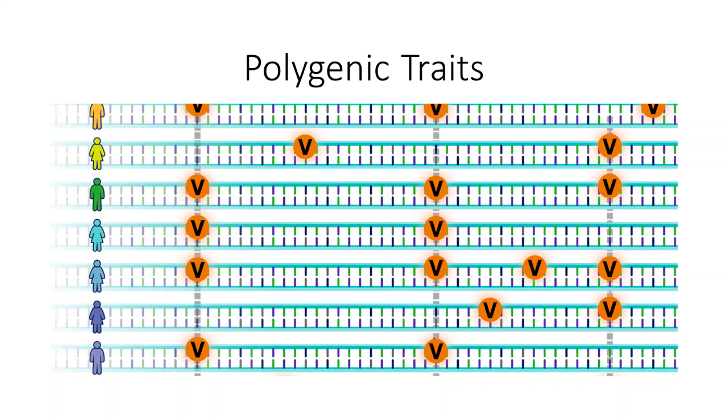Most complex traits, however, are a result of the combined influence of a multitude of genetic variants affecting thousands of genes in your genome, each responsible for only a fraction of the overall genetic contribution to the trait. We refer to these as polygenic traits.